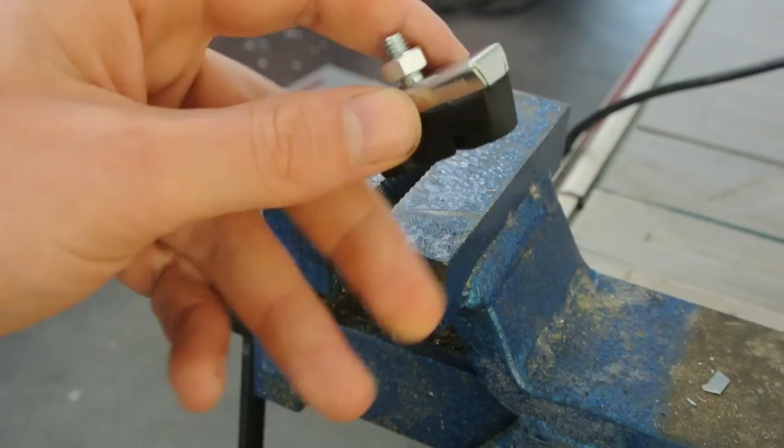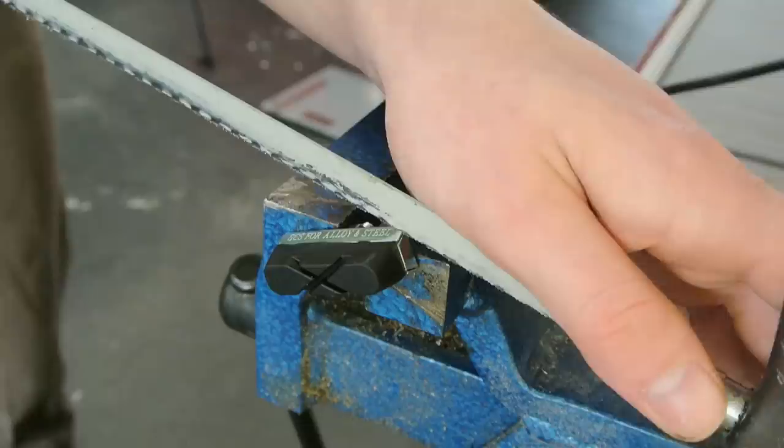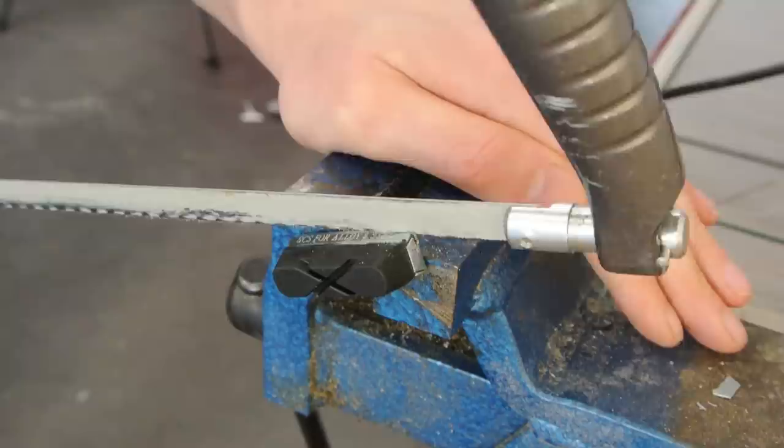I went to the local hardware store and bought some rubber bicycle brakes. They were too bulky to fit in the tube, so I had to slice them up and glue them to my own brake plate.